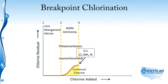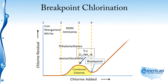As we continue adding chlorine, there's a reaction between the chlorine and the ammonia and nitrogen, and it starts destroying that residual until it bottoms out at point four, which is what we call breakpoint. At the breakpoint, we've reduced the chlorine residual as far as it's going to go. Now as we continue to add chlorine, we're going to see a linear increase in the chlorine residual, and it'll be in the form of free chlorine.